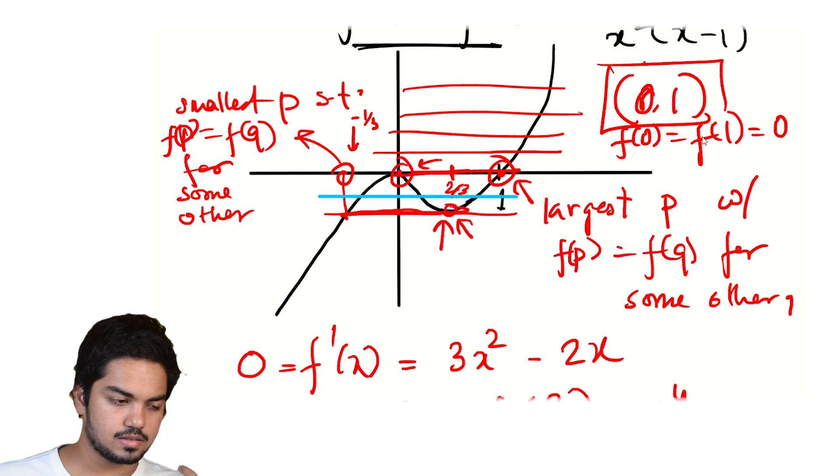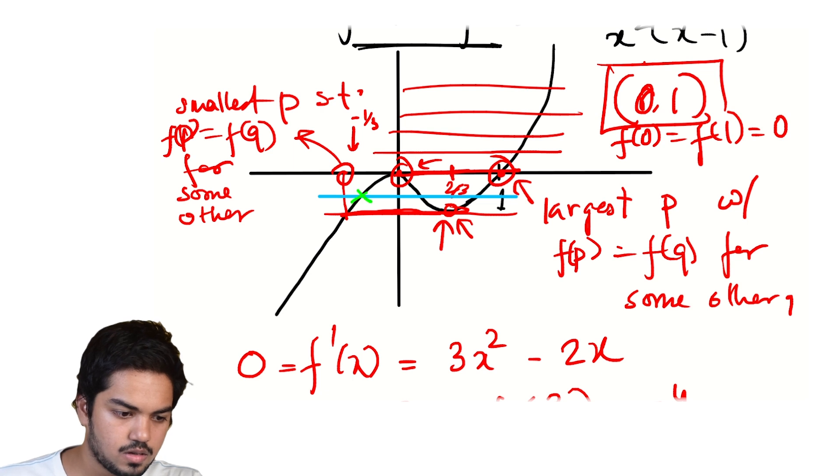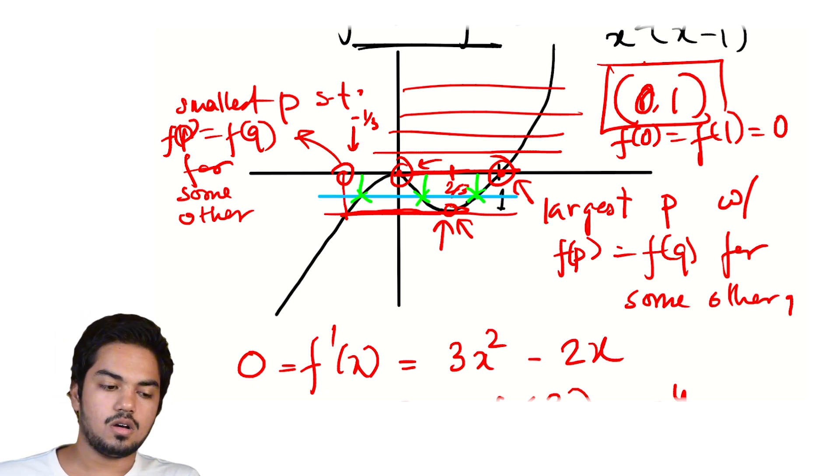For every value between 0 and -4/27, we get 3 intersections. This is visible from the graph. And so, let's choose a different color. These are the three intersections.